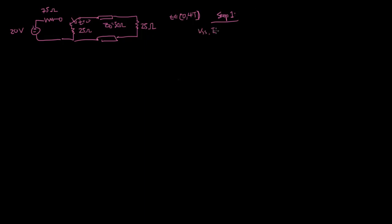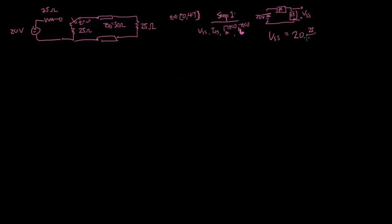Let's start by drawing what the circuit looks like before we flip the switch. We have our 20 volt generator going across this 75 ohm resistor and then this 25 ohm load, and VSS here is the load voltage. VSS is simply the voltage divider between these two resistors: 20 volts times 25 over (25 plus 75), which gives us 5 volts.